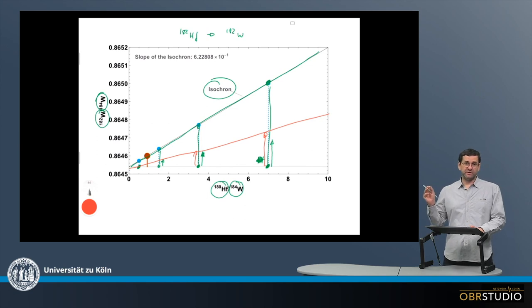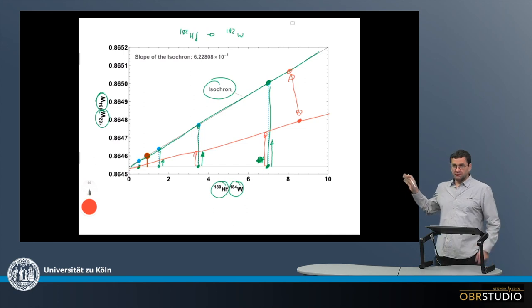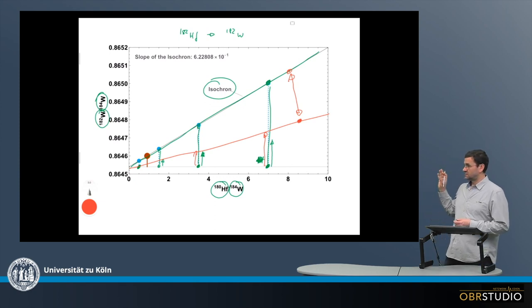And when we have these two isochrons here, then we can use the slopes of these isochrons to calculate a time difference between these two isochrons. And this is the age we get from the short-lived decay systems. We can calculate age differences. We cannot calculate absolute ages.